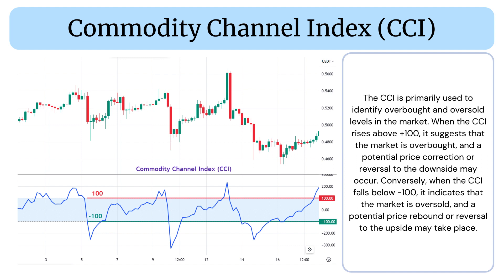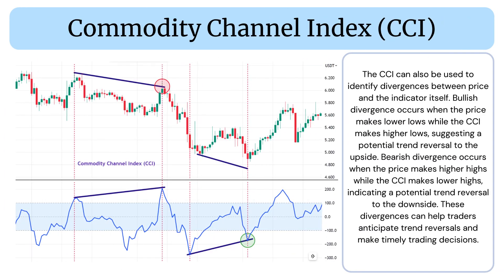A potential price rebound or reversal to the upside may take place. The CCI can also be used to identify divergences between price and the indicator itself. Bullish divergence occurs when the price makes lower lows while the CCI makes higher lows, suggesting a potential trend reversal to the upside. Bearish divergence occurs when the price makes higher highs while the CCI makes lower highs, indicating a potential trend reversal to the downside.